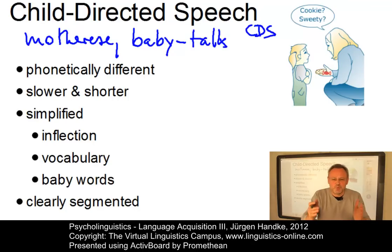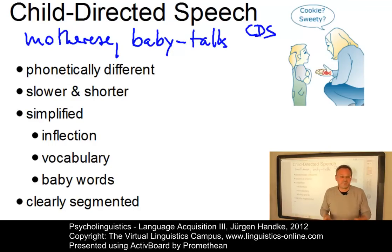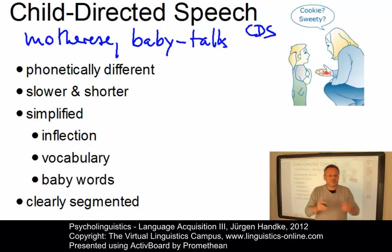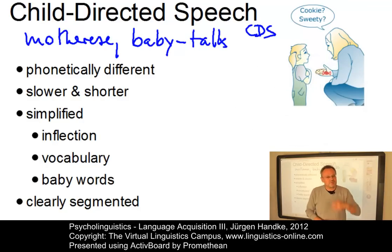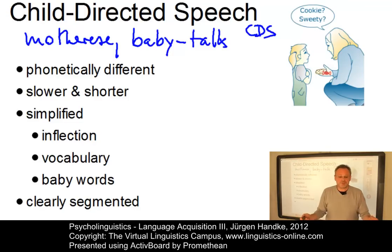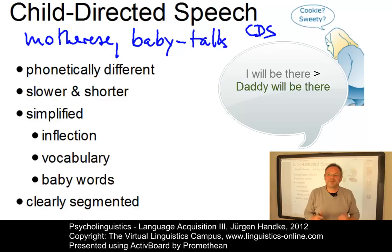Child-directed speech is phonetically different, slower, and shorter. It is simplified — we use fewer affixes and the inflection is reduced. The vocabulary is restricted; we use baby words such as 'moo moo.' Utterances are clearly segmented to make them more audible. Intonation is more exaggerated and higher-pitched to make things more expressive. And sometimes it is unusual — for instance, parents avoid pronouns and say things like 'Daddy will be with you soon, my dear.'